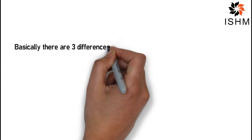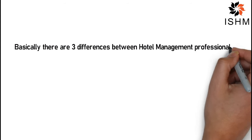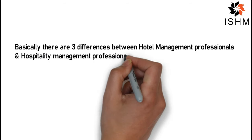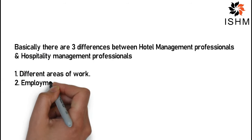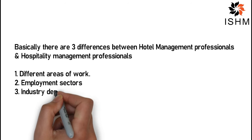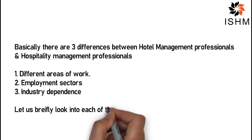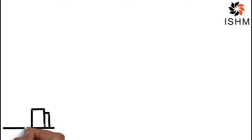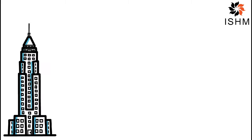Basically, there are three differences between hotel management and hospitality management: number one, different area of work; number two, employment sectors; and number three, industry dependence. Let us briefly look into each of them.